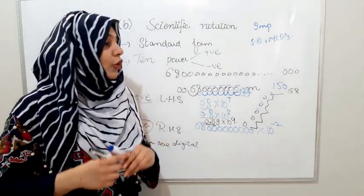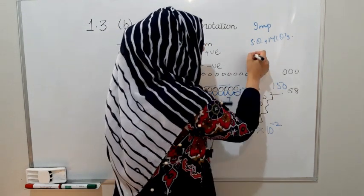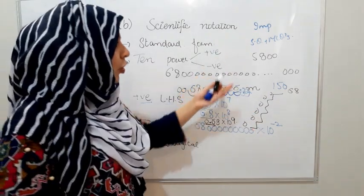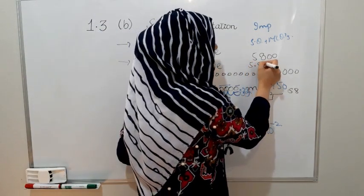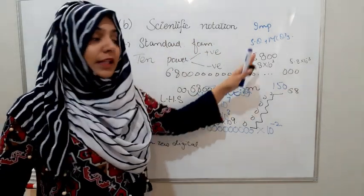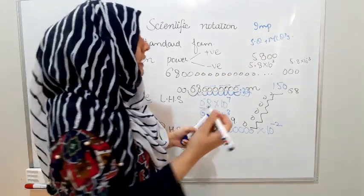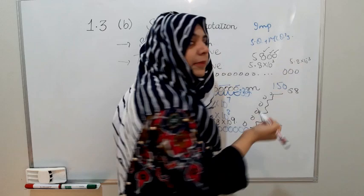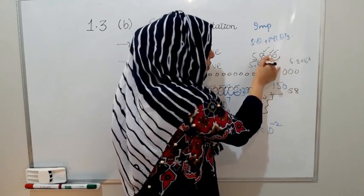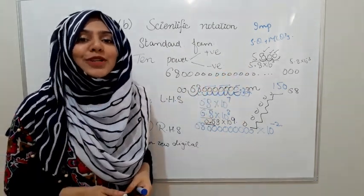This appears in many MCQs. For example, suppose we have the number 5800. What is its standard form? The options might be: 5.8 × 10 to the power 3, or 5.8 × 10 to the power minus 3, or other choices. You need to see that the decimal point moves to the left side. From 5800 to 5.8, it moves 3 places to the left, so the correct answer is 5.8 × 10 to the power 3.